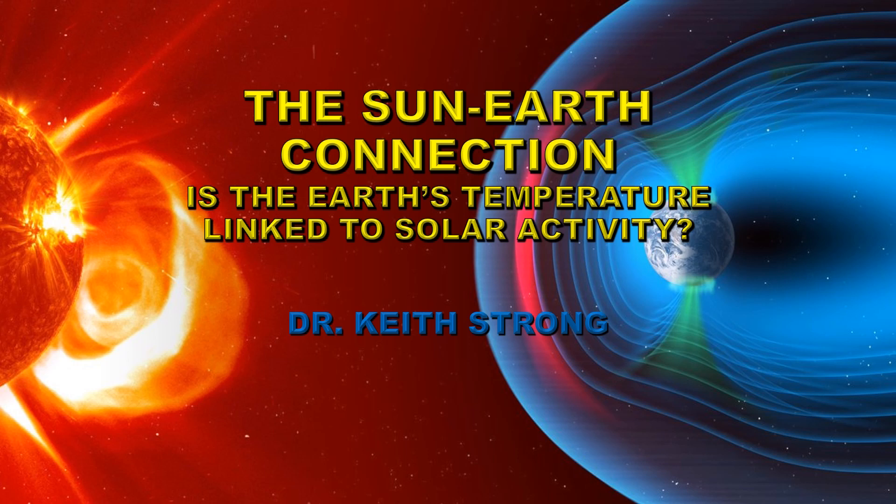The other thing it produces is charged particles in the form of the solar wind and coronal mass ejections and those have effects on the Earth as well in terms of things like aurora. The third component is magnetic field and that's carried along with the solar wind and coronal mass ejections. While it in and of itself does not carry much energy, the magnetic field can help reconfigure the Earth's magnetosphere and allow more access to those charged particles.